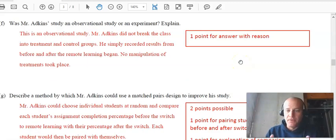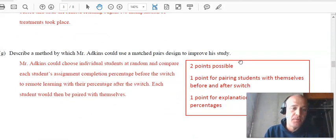All right, so this is an observational study. An experiment would have to have some sort of treatment imposed on the subjects. A matched pair design is when you typically have the units or subjects or people. And you would give a treatment to that person and do a pre and post measurement. So what he says here is that you choose an individual student at random, compare that student's completion percentage with their percentage after the switch, and then each student would then be paired with themselves. So this is where you would see those paired t-tests or the one sample t-test that we've seen in chapter nine.